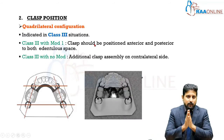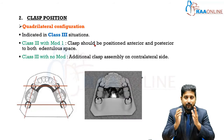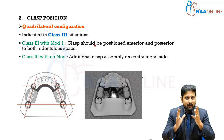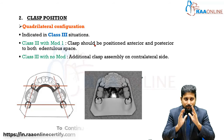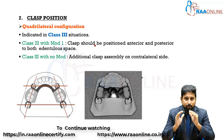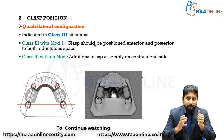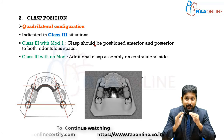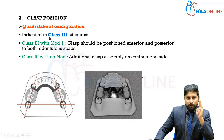Then comes clasp position. You cannot simply place an infinite number of clasps in a removable partial denture to make it retentive. You have to try and keep clasp design to a minimum, as clasps can create a lot of stress on the abutment teeth. There are three types of configurations for clasps.